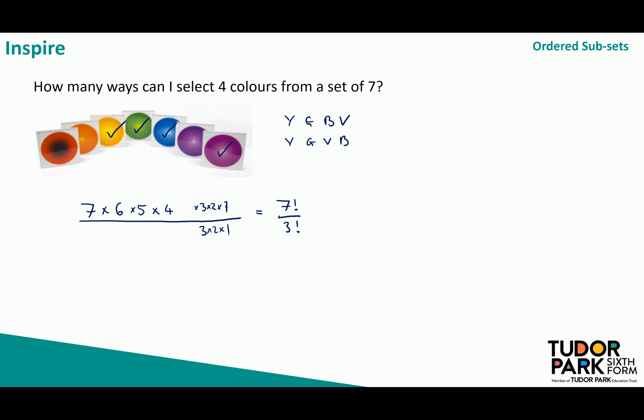Now how do we get there from seven and four? Well seven factorial is easy that's just the set of objects that we're picking from but where did that three come from? Well in total I've got seven objects that I'm picking from. I'm choosing four of those objects. Well that must leave me with seven minus four of those objects left.